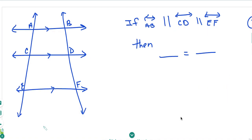So we can say if line AB is parallel to line CD and that is parallel to line EF, then AC over CE will be proportional to BD over DF.